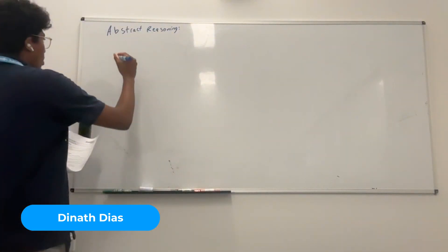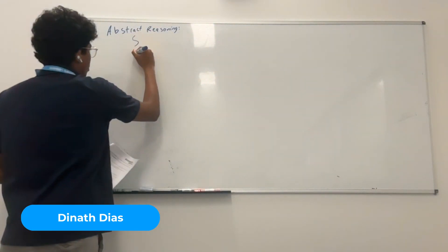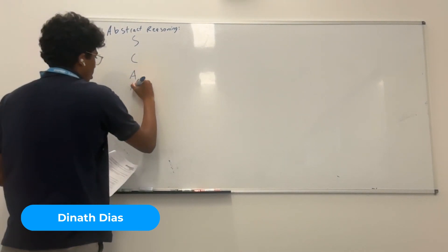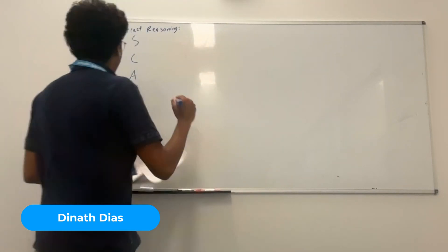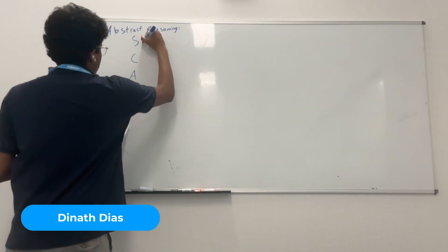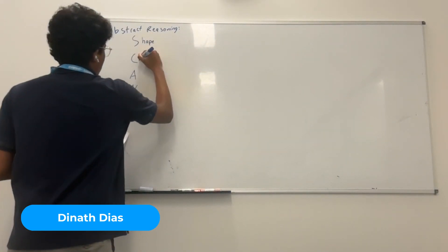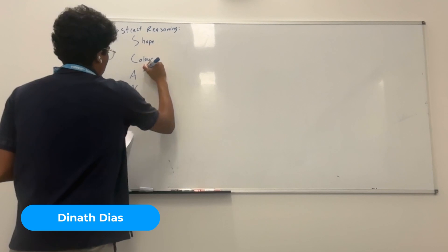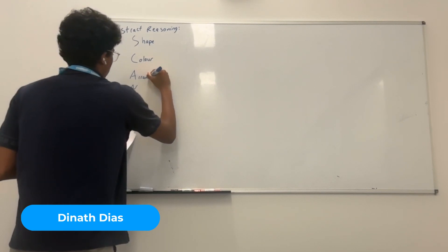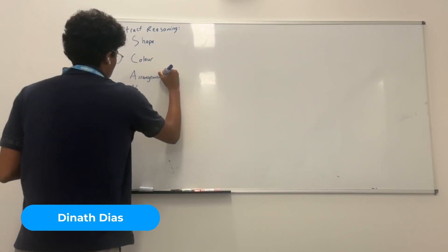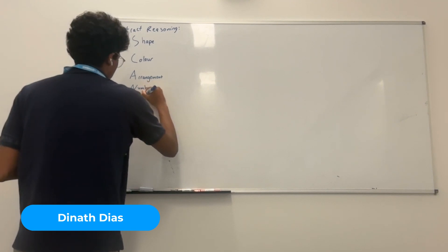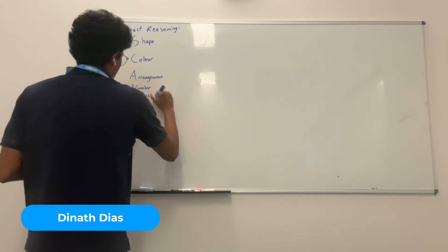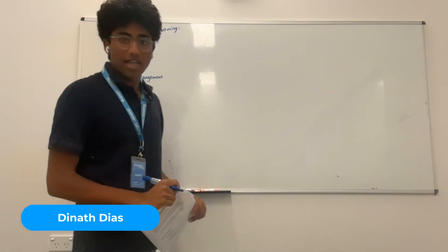The mnemonic we're going to be looking at is SCANS. You need to remember SCANS. This is what everything stands for: Shape, Color, Arrangement, Number, and Symmetry. These are the properties of the shapes or patterns we'll be looking at, because abstract reasoning is all about patterns.